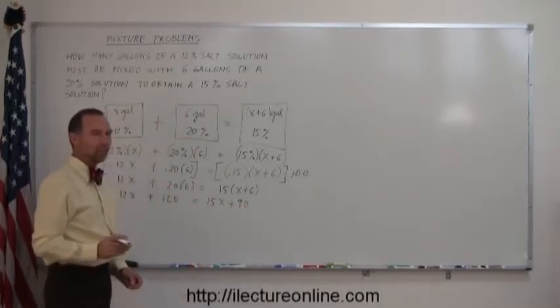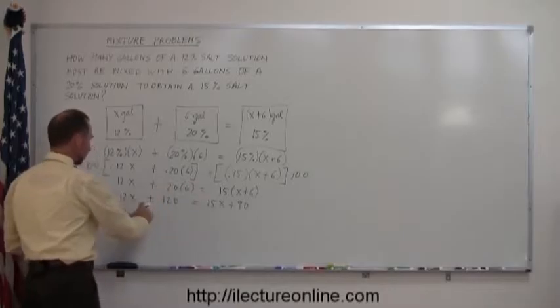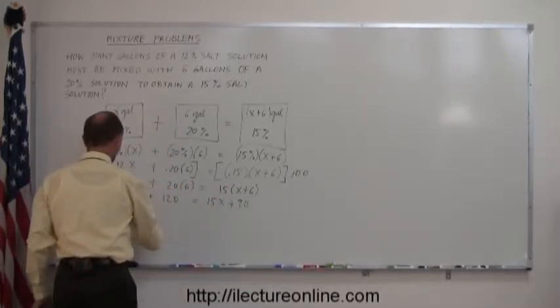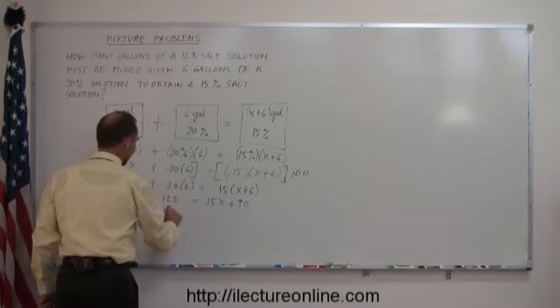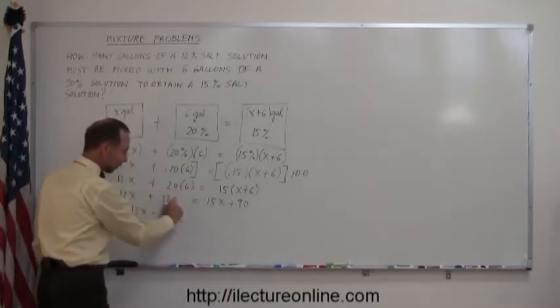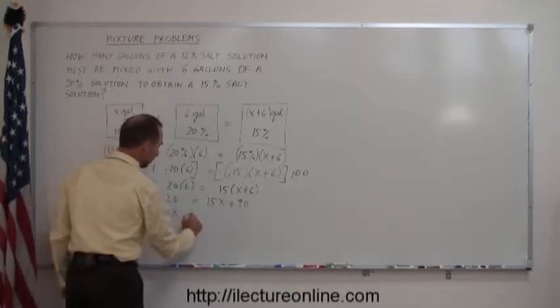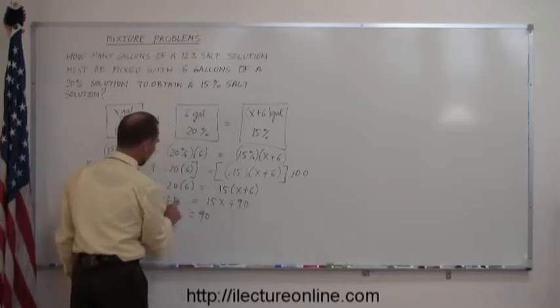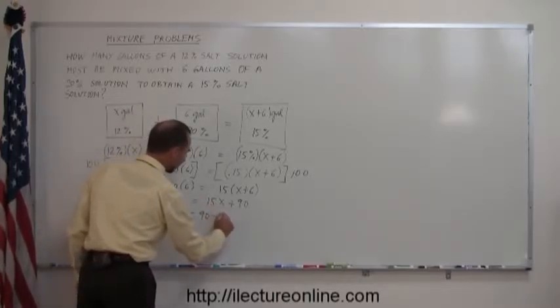The next step is to move all terms with X to the left side and all other numbers to the right side. So we have 12X minus 15X. Remember, when you move something across the equal sign, the sign changes. This equals 90, and when we move the 120 over, it becomes minus 120.